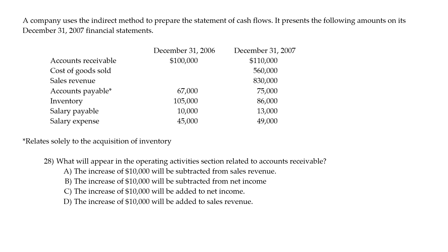We're talking about operating activities, and operating activities is the only section where direct method or indirect method matter. The operating section can be either direct or indirect — that's the only one. Investing and financing activities are always done with the direct method. So the indirect method is really just a way to differentiate the first operating activity section.